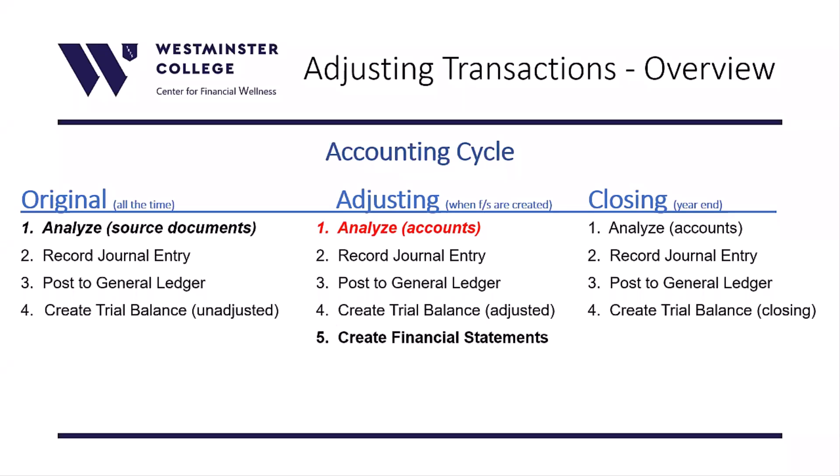In this lesson we introduce another type of transaction. What is different about this type of transaction is the reason why they're created and the source of the event — what initiates it. We will use the accounting cycle to explain. The accounting cycle is a sequence of activities or steps that take place to record all accounting transactions. A simplified version is shown here, and the activity we have been involved with thus far is number one: analyze source documents.